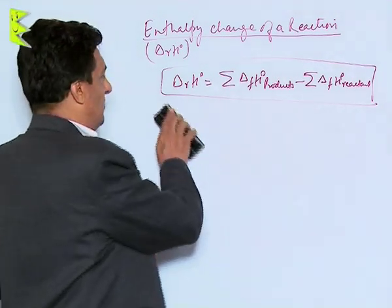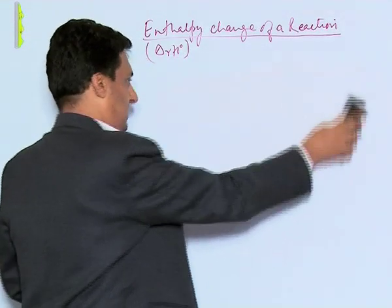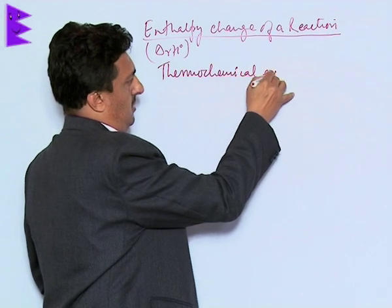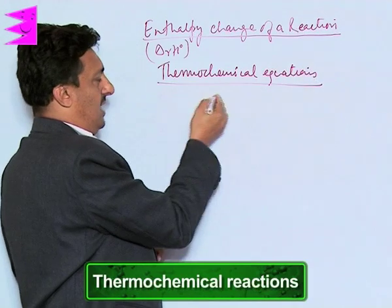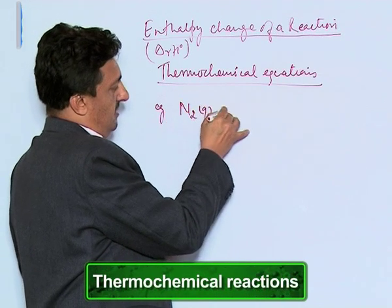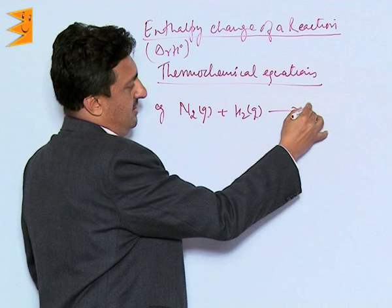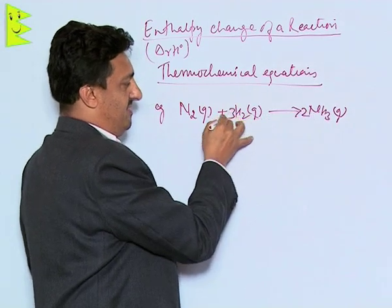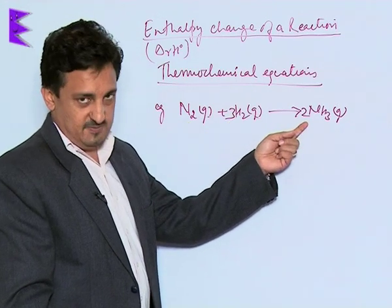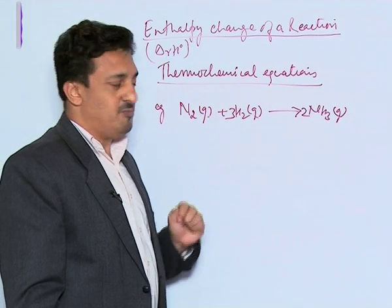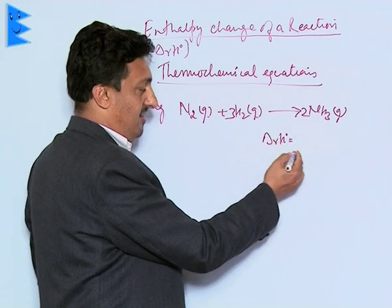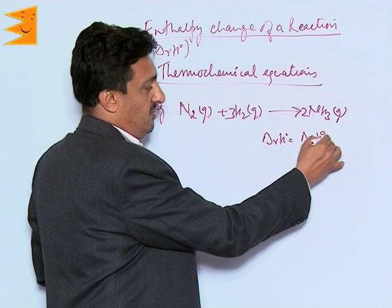In thermochemical equations we use this formula. For example, consider the reaction of nitrogen gas with hydrogen gas to form ammonia gas. When balanced, it is: one mole of N2 combining with three moles of H2 giving two moles of NH3. Since ammonia is being formed, the enthalpy change in this reaction is called the enthalpy of formation of ammonia.